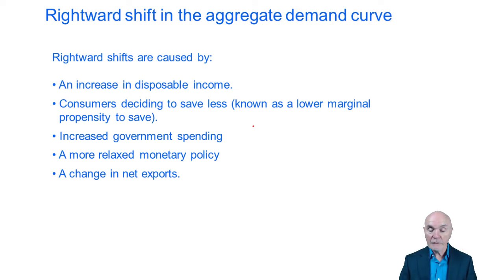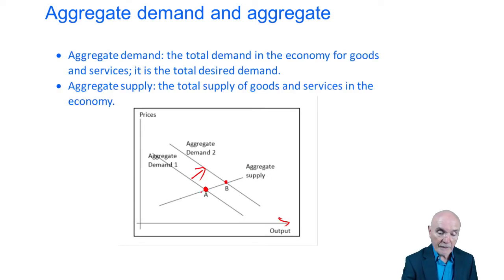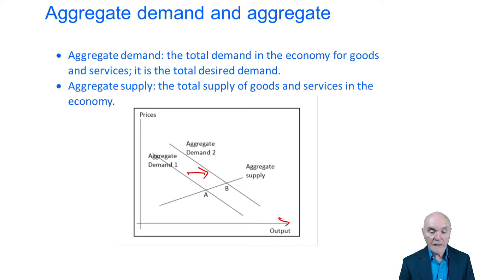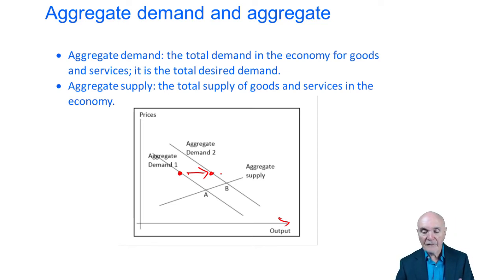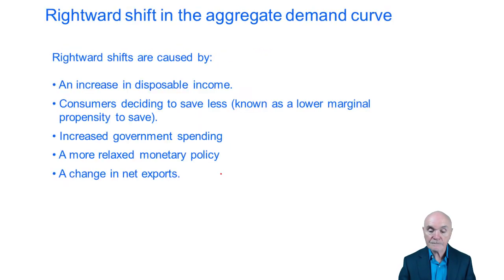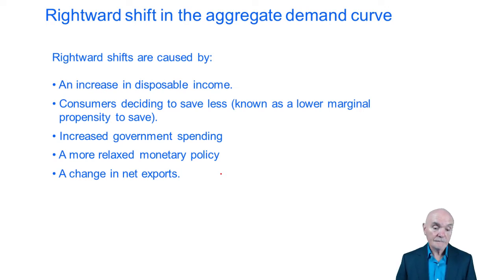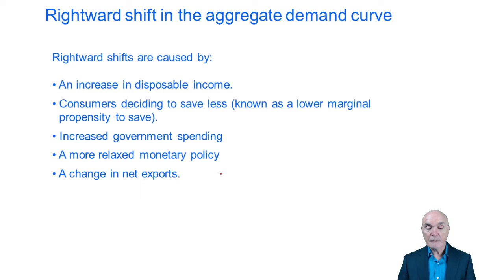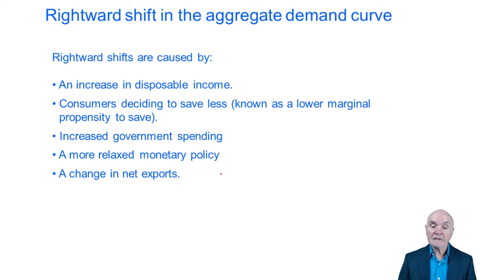A rightward shift in the aggregate demand curve means moving the whole curve — not moving up and down it — so that at any particular price of goods there's more demand. Ways this could happen include an increase in disposable income, maybe by reducing tax. Another way is reducing interest rates: in many economies much of people's disposable income goes on mortgage payments, and if mortgage interest rates fall, people have more spending money and aggregate demand increases.